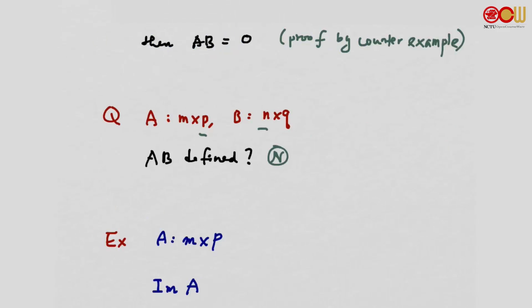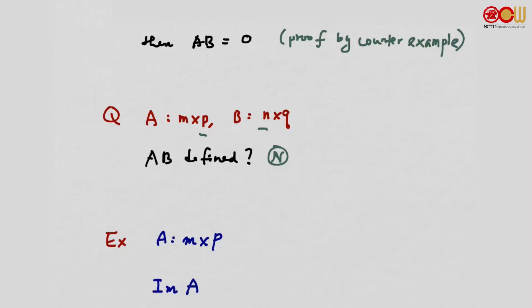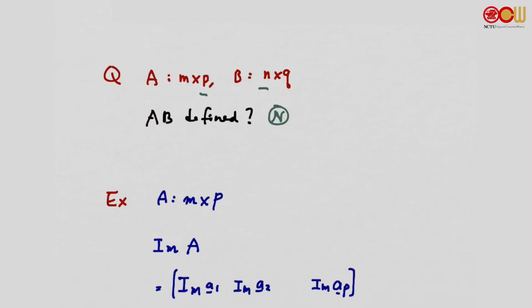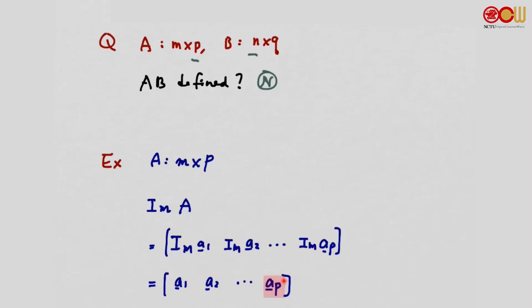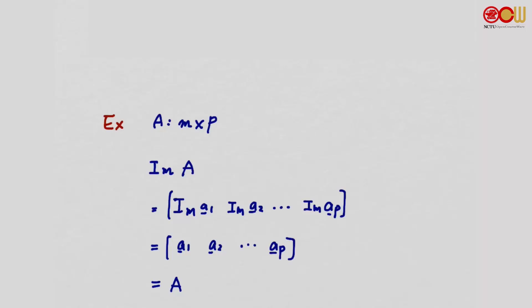Let's look at an example of matrix products. Suppose A is an M by P matrix and we compute the matrix product I_M · A, the identity matrix times A. By definition, the first column of the product is I_M · A1, the second column is I_M · A2, continuing to the last column I_M · AP. Since the matrix-vector product of the identity matrix with any vector gives back that vector, each column is just A1, A2, ..., AP. So we get A back.